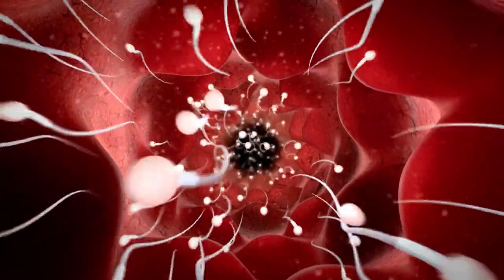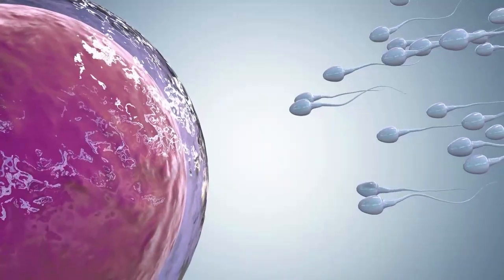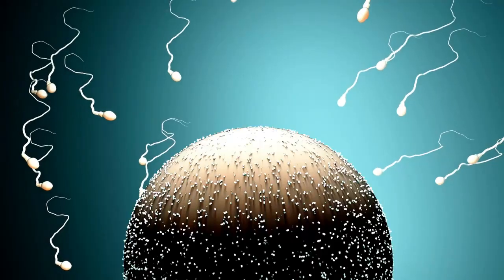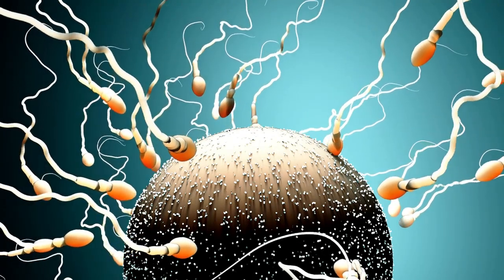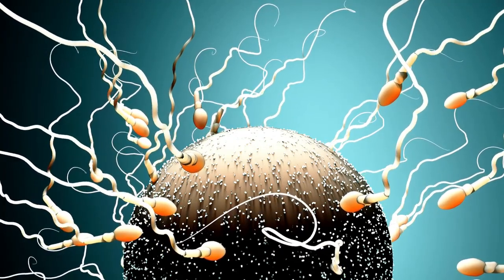The sperm's journey begins. Fertilization begins during sexual intercourse when approximately 300 million sperm enter the vagina. However, only a fraction of them will survive the journey to reach the egg. Many will perish in the acidic environment of the vagina, but the fortunate ones benefit from the protective elements in the surrounding fluid.